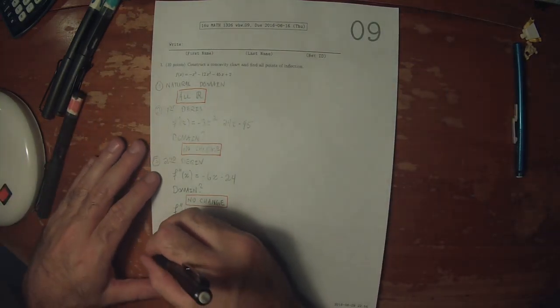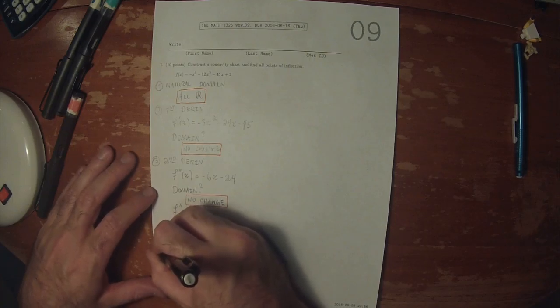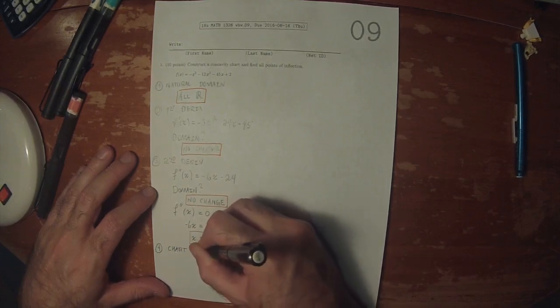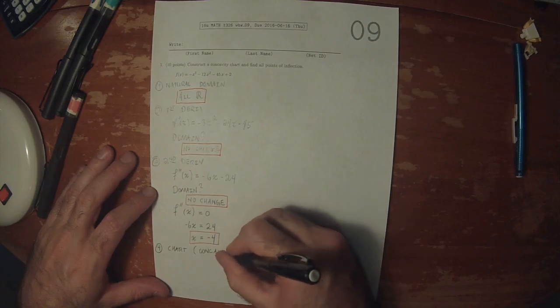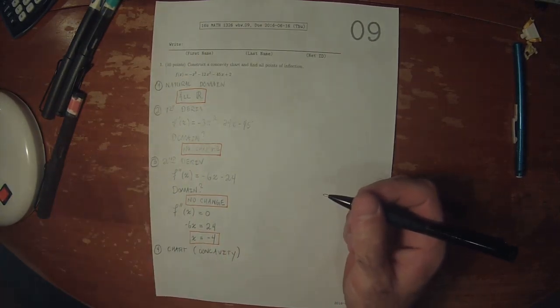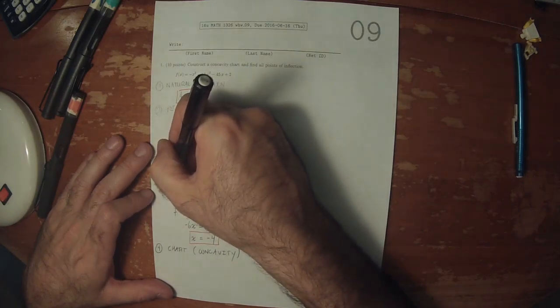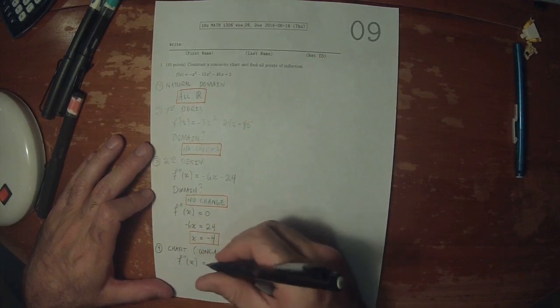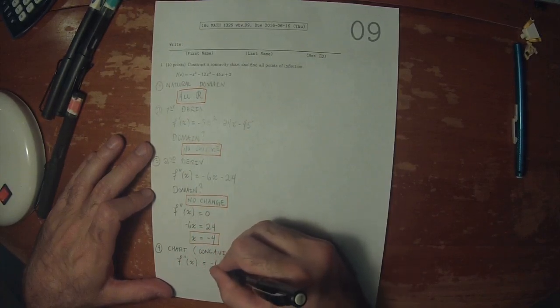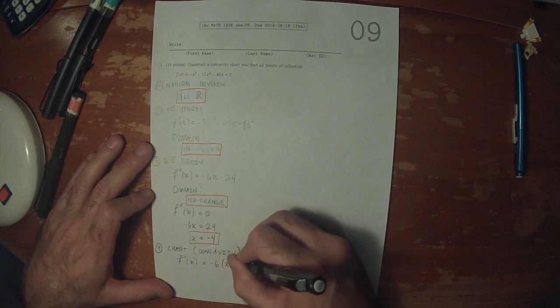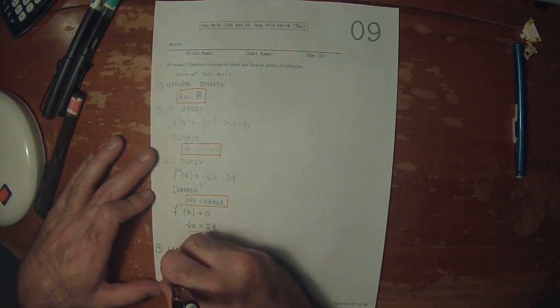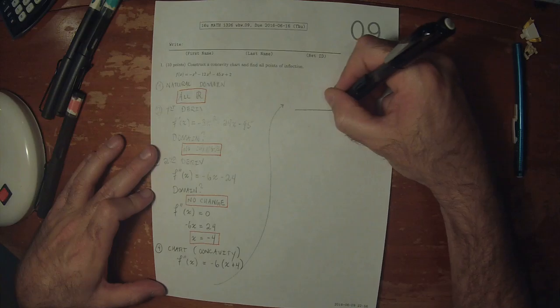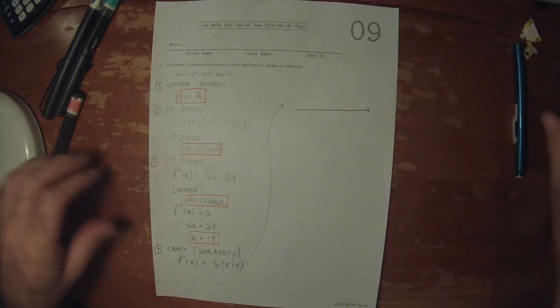Now, we'll make the chart. This is the concavity chart. I'll take this second derivative and factor it into negative 6 multiplied by x plus 4, and I'll plot the one point that we found.